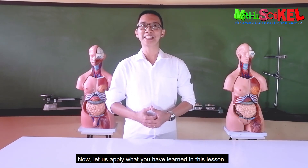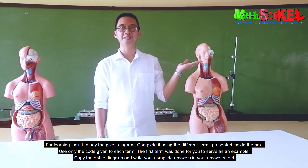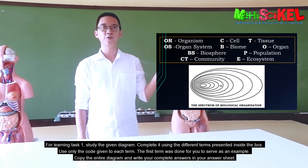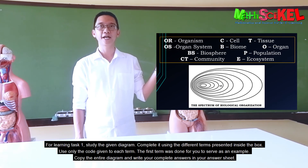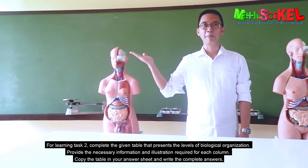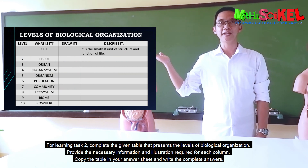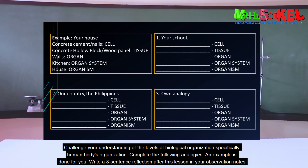Let us apply what you have learned in this lesson. For Learning Task 1, study the given diagram and complete it using the different terms presented inside the box. Use only the code given for each term. The first term was done for you as an example — copy the entire diagram and write your complete answers in your answer sheet. For Learning Task 2, complete the given table presenting the levels of biological organization, providing the necessary information and illustrations for each column. Copy the table in your answer sheet. Also, challenge your understanding of the levels of biological organization, specifically human body organization, by completing the given analogies.